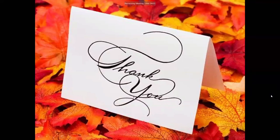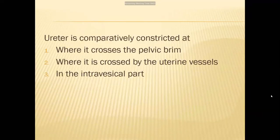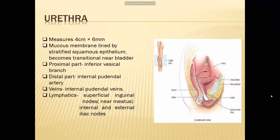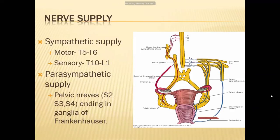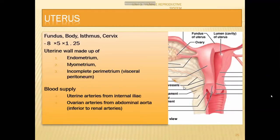The supports of the uterus are divided into upper, middle, and lower tiers. The upper tier includes the tubo-ovarian ligament and infundibulopelvic ligament. The middle tier consists of the broad ligaments and connective tissues. The lower tier includes the round ligament, and the cardinal (Mackenrodt's) ligament, anteriorly the pubocervical ligament, and posteriorly the uterosacral ligament.